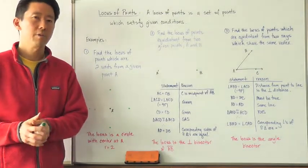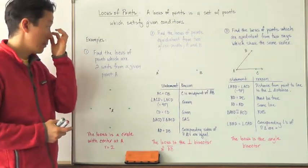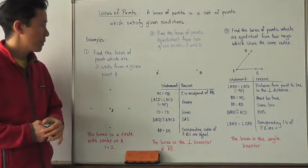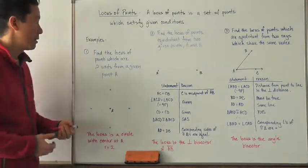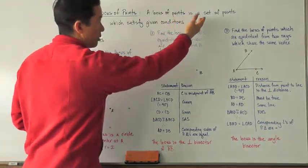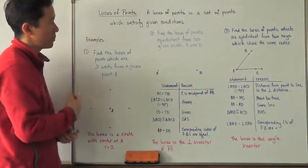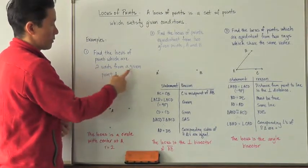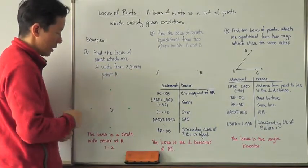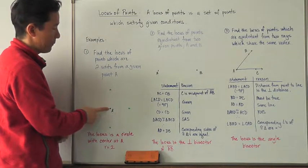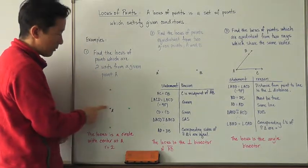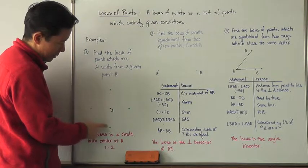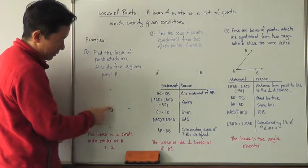We're going to take a look at three particular examples which we need to know. Here's the first one: find the locus of points which are two units from a given point A. What we're trying to do is find all the points which satisfy this particular given condition — two units from a given point A. Here's my given point A, and if I go two units away, I can include those four points.